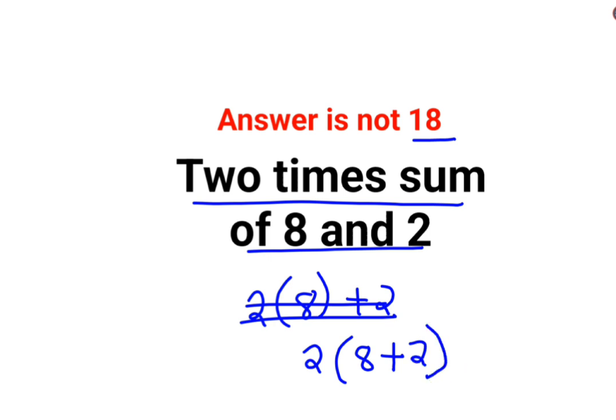So we've got this. Please understand, sum means addition of what? Of 8 and 2. So we need to do addition of 8 plus 2. Okay, so now the answer comes out to be 2 multiplied by 8 plus 2, which is 10.